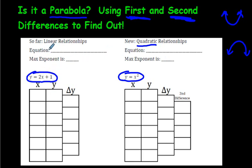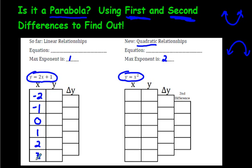If you look at this equation here, y equals 2x plus 1, the maximum exponent is 1. And over here the maximum exponent is 2. When you're doing a table of values, you can pick whatever numbers you want for x. I'm going to pick negative 2, negative 1, 0, 1, 2, and 3, and I'll do that for both of these tables of values. A table of values is when we take each one of these and plug it into the equation. I'm going to be doing it quickly, so hopefully you can follow along.